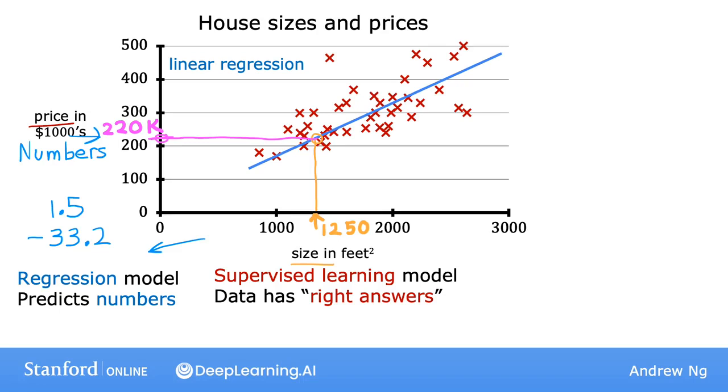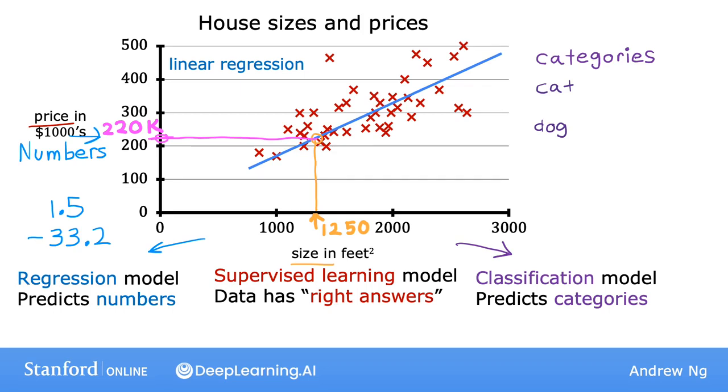And just to remind you, in contrast with the regression model, the other most common type of supervised learning model is called a classification model. A classification model predicts categories or discrete categories, such as predicting if a picture is of a cat, meow, or a dog, woof, or if given a medical record, it has to predict if a patient has a particular disease. You'll see more about classification models later in this course as well.